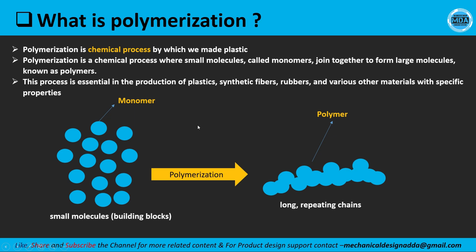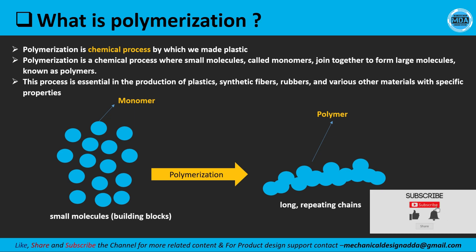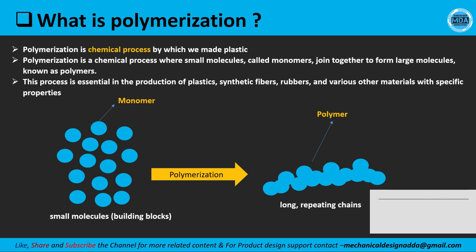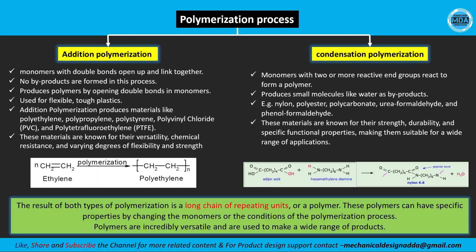In this process, small molecules are joined together to form a long and repetitive chain through the polymerization process. This complete reaction is very essential in the production of plastic materials, synthetic fibers, rubbers, and various other types of materials. There are two types of polymerization process: addition polymerization and condensation polymerization.